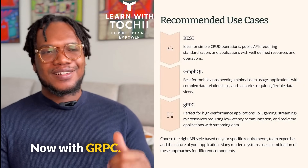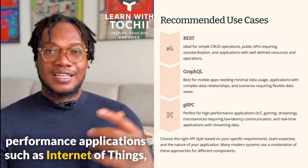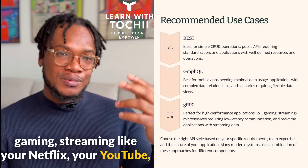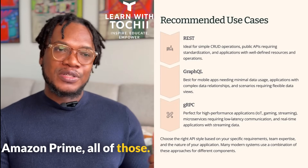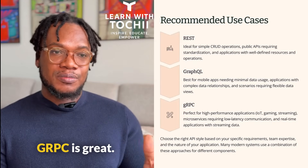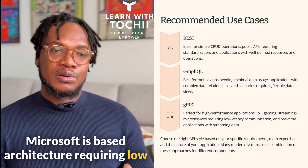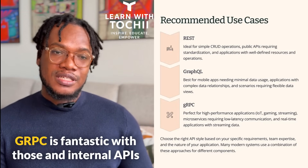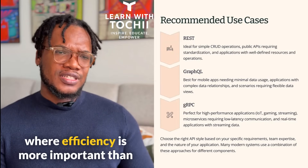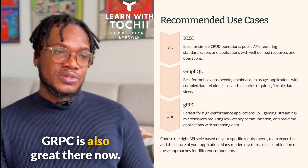With gRPC, it is very great for high-performance applications such as Internet of Things, gaming, and streaming like Netflix, YouTube, and Amazon Prime. Real-time applications requiring streaming data — gRPC is great. Microservice-based architecture requiring low-latency communication — gRPC is fantastic. And internal APIs where efficiency is more important than public API compatibility — gRPC is also great there.